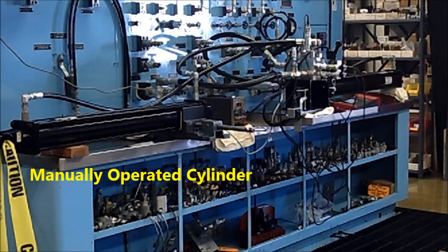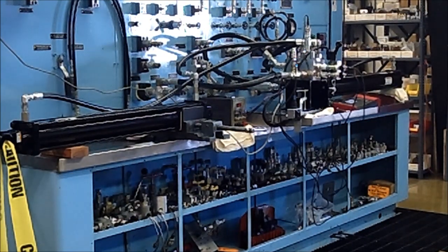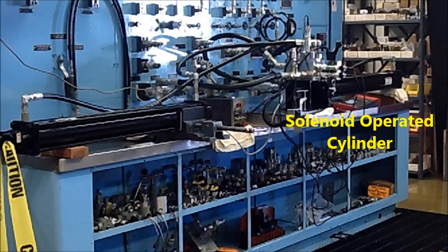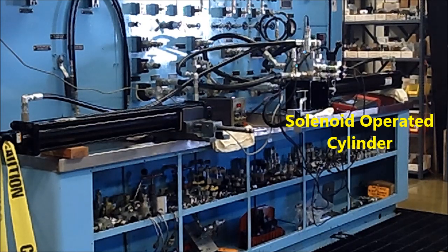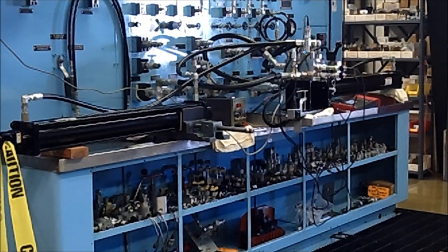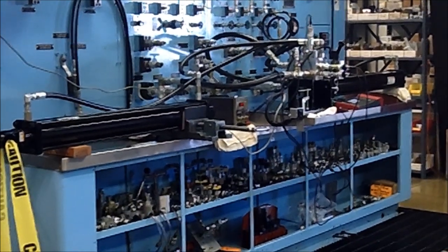On the left side you see a cylinder connected to a manually operated workport. The cylinder on the right is proportionally controlled electronically. The more current that is directed to the solenoid, the more flow there is from the workport.